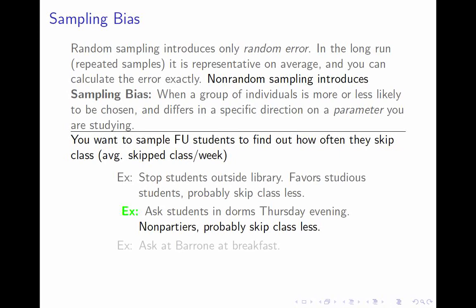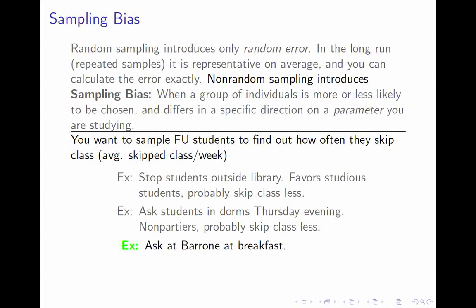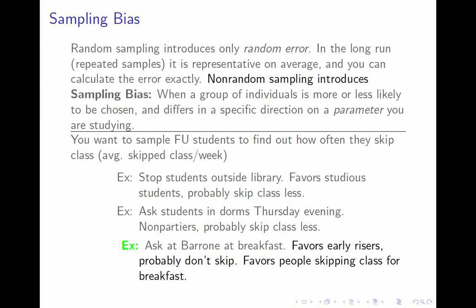Suppose we ask students at the dining hall at breakfast time. I would say this favors people who get up for breakfast, since the most common reason to skip classes is sleeping in. These are people who are probably morning people and less likely to skip classes. You could argue the opposite — that people skipping class are doing so to go get breakfast, in which case the dining hall would be the place to find class skippers. What I really want you to be able to do is, given a situation, identify possible sources of sampling bias and argue for them. Once you can do that, it's easy to decide which ones are worth worrying about.